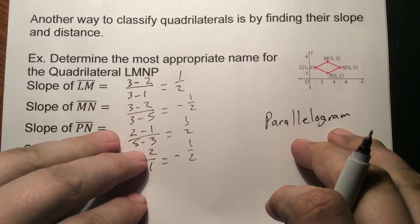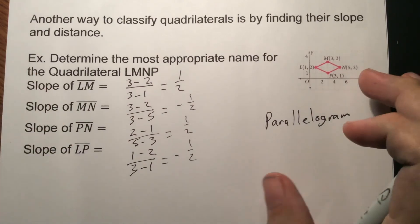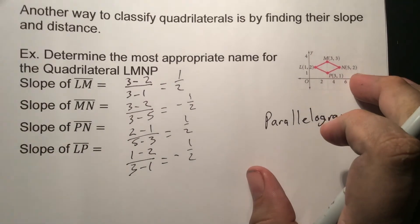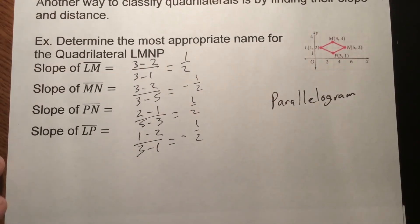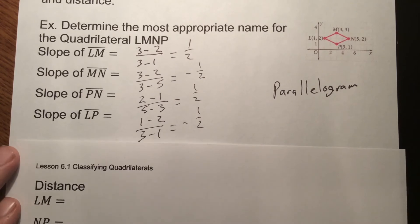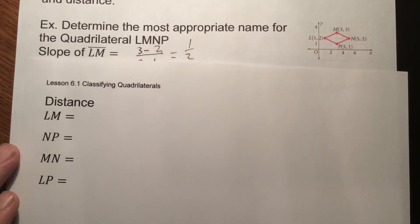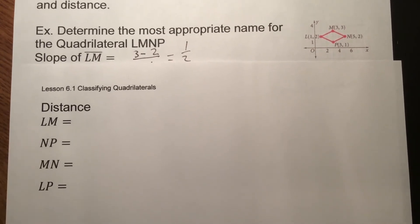Using the same approach here — opposite sides have the same slope, so we know it's a parallelogram. The next step is to check whether the sides all have equal lengths. If they do, we can classify it as something more specific than just a parallelogram.